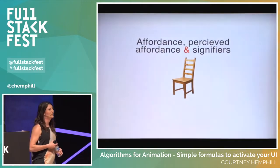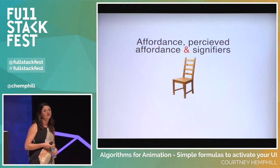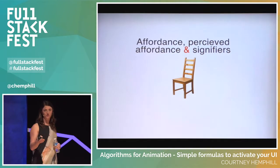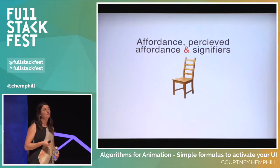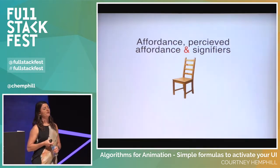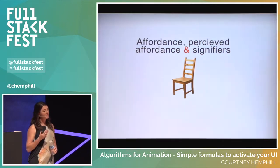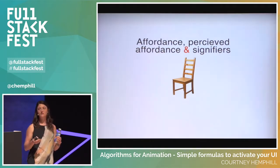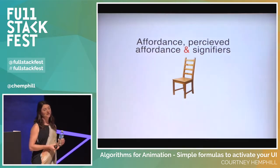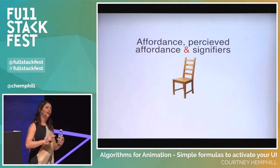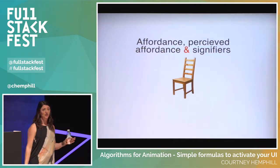One of the basic tenets around psychology is the notion of affordance. As humans, you can look at a chair and afford a use for it — you know you can sit in it, get on top of it to reach a book, or that picking it up from the back will cause it to swing because of the weight of the seat. Perceived affordance is something Don Norman brought up in his book The Design of Everyday Things.